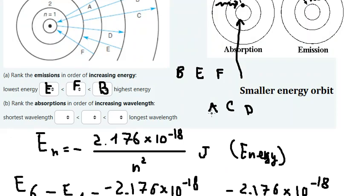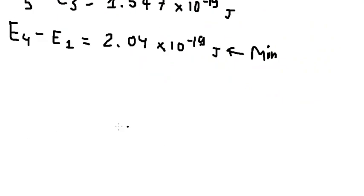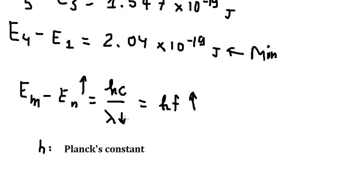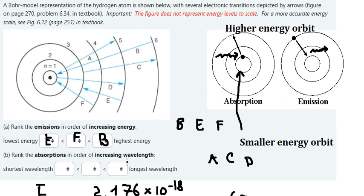Now we do the same for A, C, and D. We also apply the second formula involving Planck's constant: higher energy means higher frequency and smaller wavelength. Since the question asks about increasing wavelength, the longest wavelength corresponds to the smallest energy, and the shortest wavelength corresponds to the highest energy.